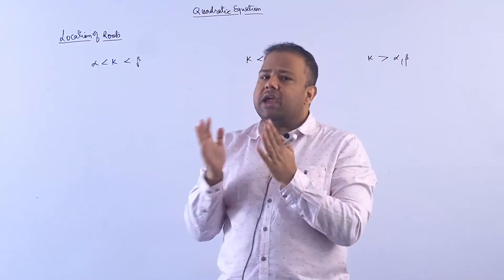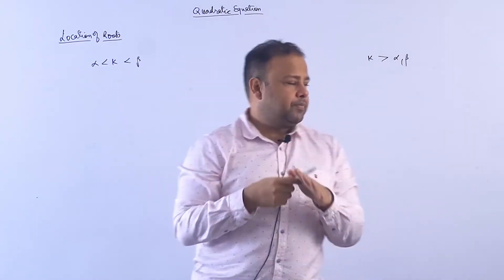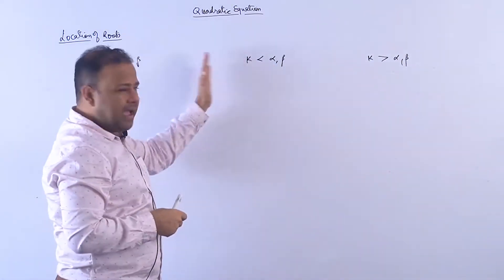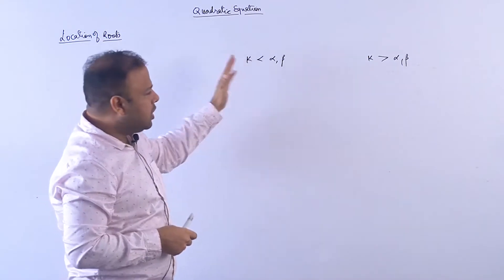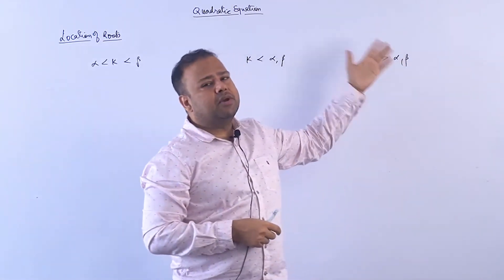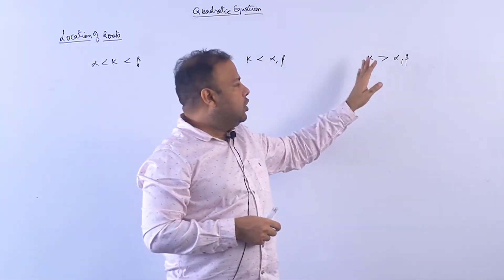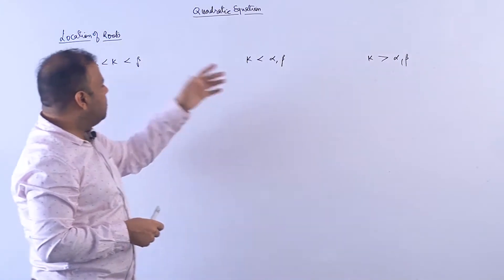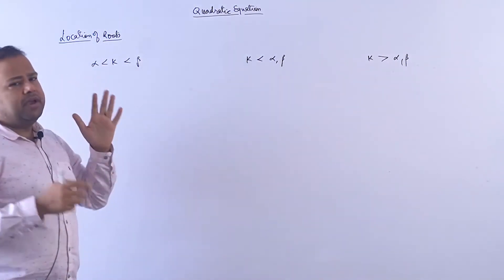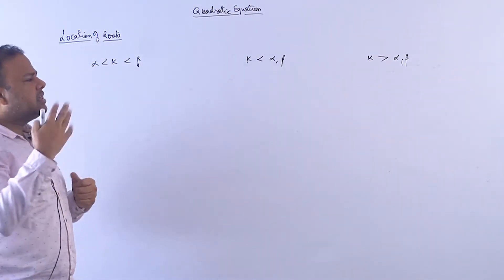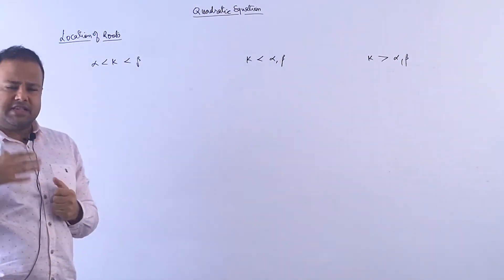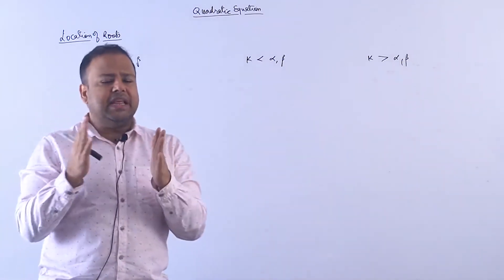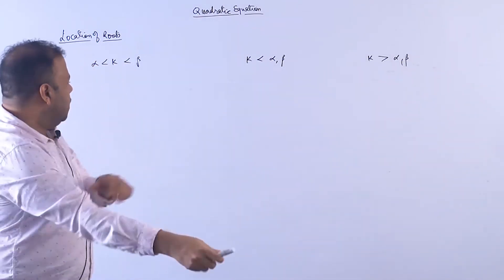So these are three main cases of location of roots: some number will be between the roots, some number will be before both roots (less than both), and some number will be after both roots (greater than both). These are three main cases. More cases will come gradually, but mainly you have to do these three cases.